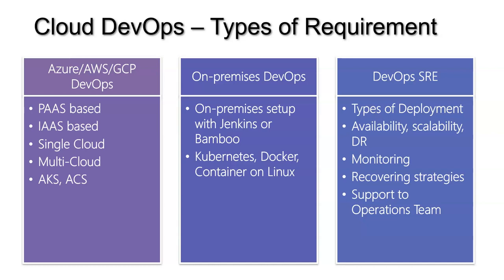Very few companies completely go with IaaS or their own on-premises servers. For DevOps SRE, in addition to what cloud or on-premises DevOps does, they also need to know the types of deployments, and they really need to care about availability, scalability, disaster recovery, very good monitoring systems, recovery strategies, and how to recover from failed deployments and provide support to the operations team.